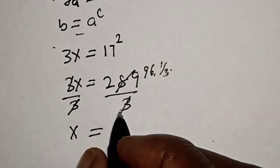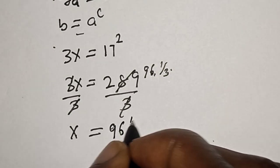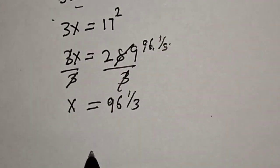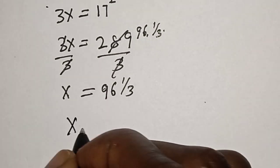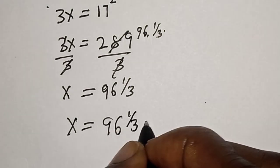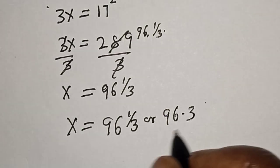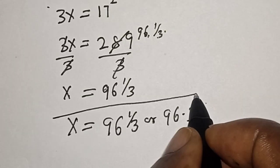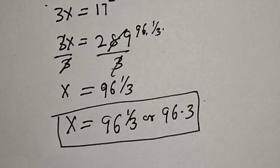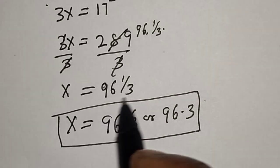So 96 and 1/3. And our final answer: x equals 96 and 1/3, or 96.3. That is our final answer. Before you leave, like, share, comment and subscribe. Thank you, bye bye.